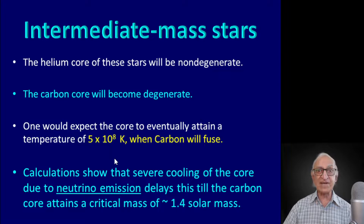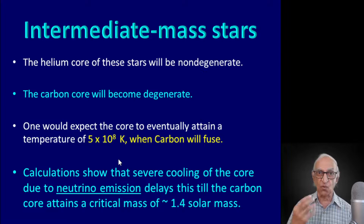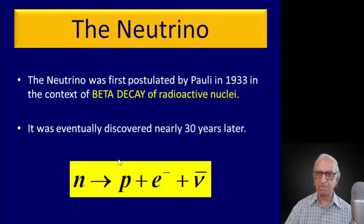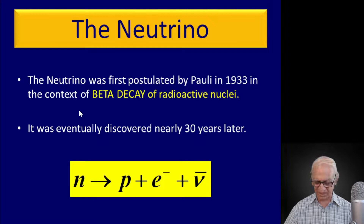Now when does this happen? Well, there is a competition here — a competition between heating and cooling. Why is the core getting heated? Because of conduction. And why is it getting cooled? Because it is creating neutrinos which carry away energy and entropy. So let me remind you once again about neutrinos, which we discussed in the fourth lecture on energy generation in stars.